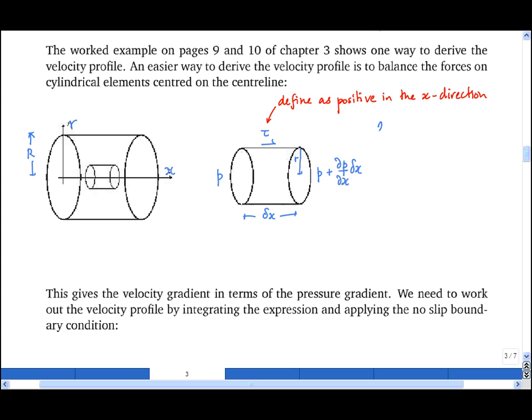So the force on the perimeter, the shear force, is 2 pi r delta x times tau, minus the pressure force on both end plates, which is pi r squared partial dp dx delta x. These two forces must sum to zero. Solving for tau, I find tau is equal to r upon 2 dp by dx.